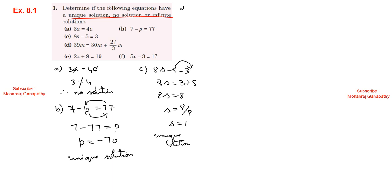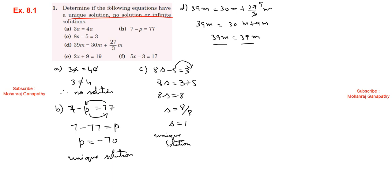Sum number 1, Part d: 39m equals 30m plus 27 divided by 3m. 27 divided by 3 cancels to give 9, so we get 39m equals 30m plus 9m, which is 39m equals 39m. Therefore they are equal, so it has an infinite number of solutions.